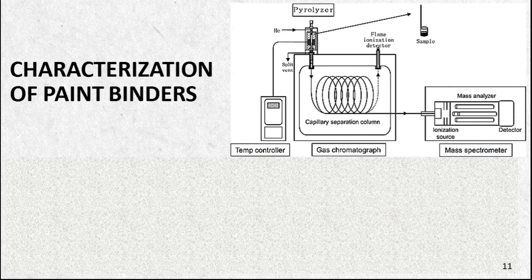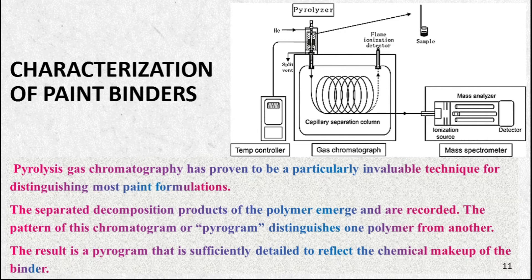Characterization of paint binders: Pyrolysis gas chromatography has proven to be a particularly invaluable technique for distinguishing most paint formulations. In this process, paint chips as small as 20 micrograms are decomposed by heat into numerous gaseous products and sent through a gas chromatograph. The polymer chain is decomposed by a heated filament and the resultant products are swept into and through a gas chromatograph column. The separated decomposition products of the polymer emerge and are recorded. The pattern of this chromatogram or pyrogram distinguishes one polymer from another, and the result is a pyrogram that is sufficiently detailed to reflect the chemical makeup of the binder.